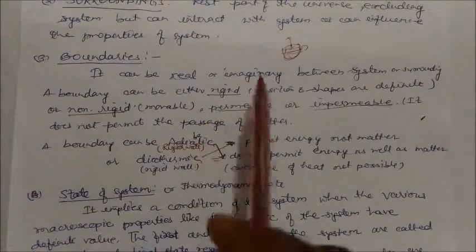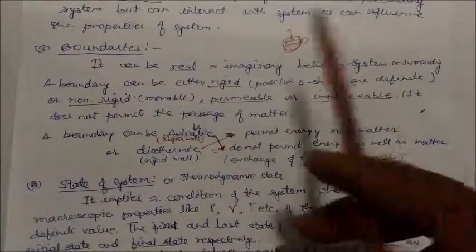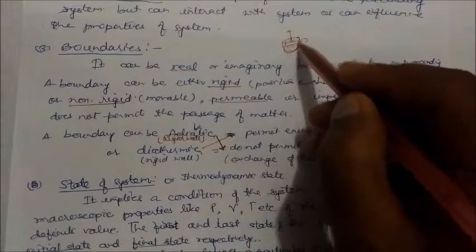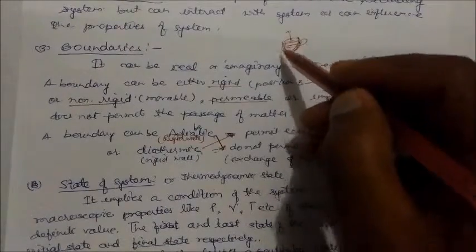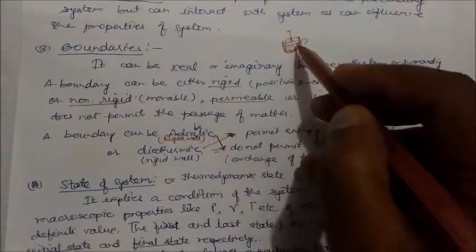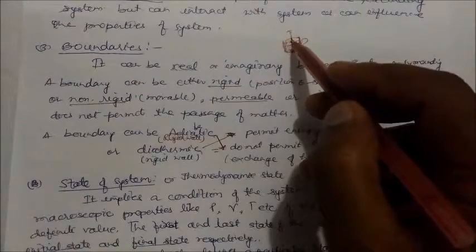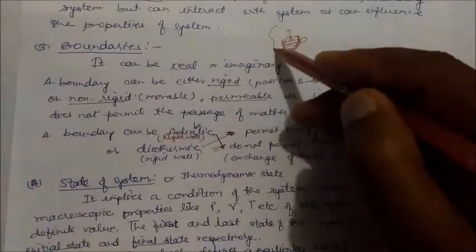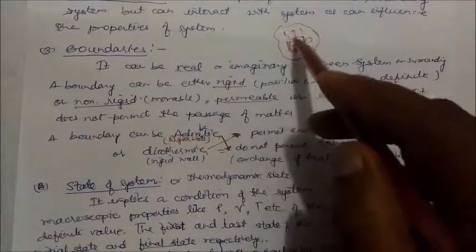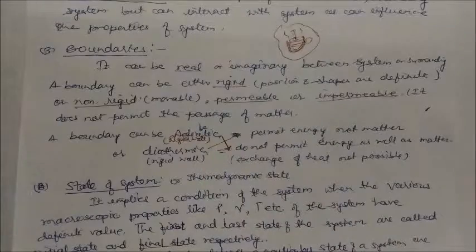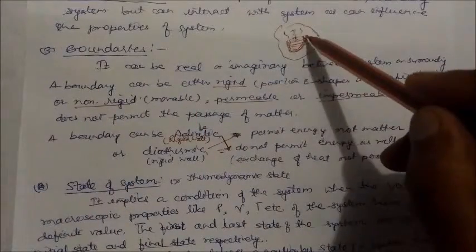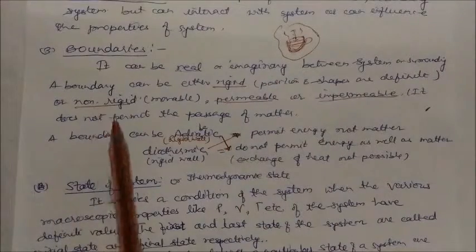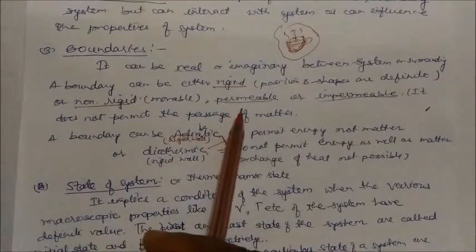A boundary can be real or imaginary, separating the system from its surroundings. For example, a cup of hot tea: the cup wall is the real boundary. Since it is an open system, matter and energy can be exchanged with the surroundings, so this boundary is effectively imaginary in that sense. A boundary can be rigid — meaning its position and shape are definite — or non-rigid, meaning movable or permeable.